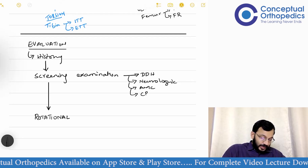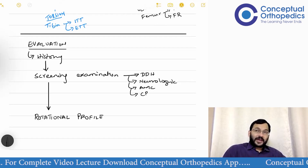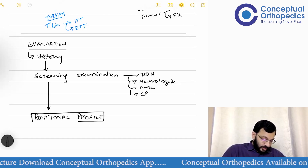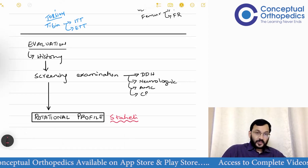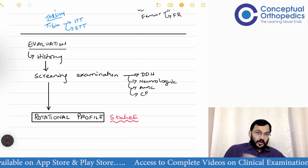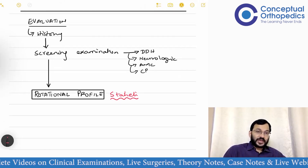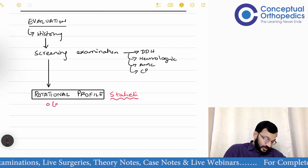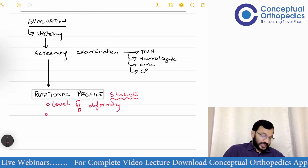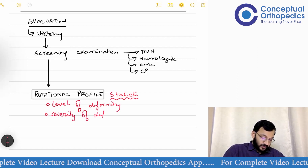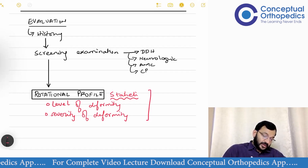Rotational profile was given by Straheli. It is a set of clinical tests that you perform so that you can pinpoint where the cause of rotation is seen. The rotational profile provides enough information to establish the level of the deformity and the severity of the deformity. Whenever we do this, the rotational profile has to be done for both sides.